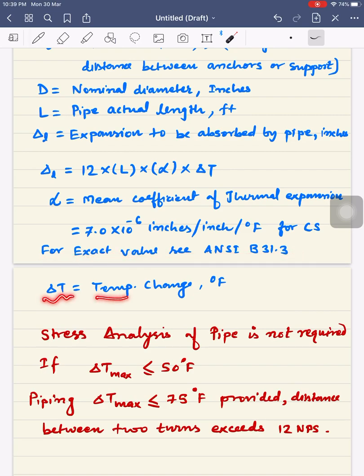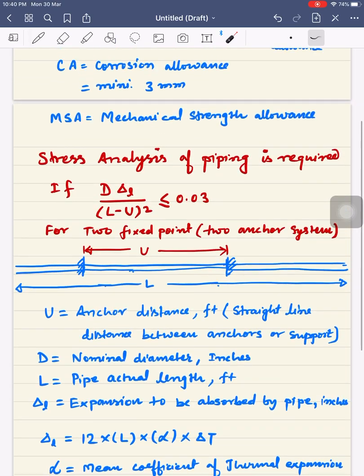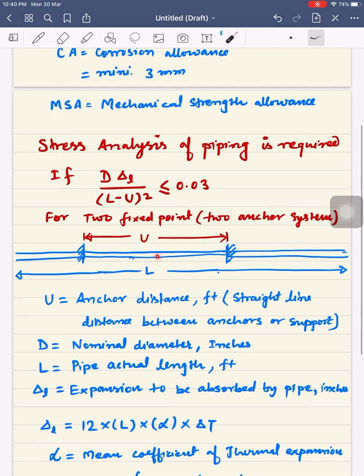For exact values of other materials, you can see the standard. Delta T is the temperature change in degrees Fahrenheit. For example, if there is fluid inside at 100 degrees centigrade and the outside temperature in winter is 0 degrees centigrade, delta T is 100 degrees centigrade.